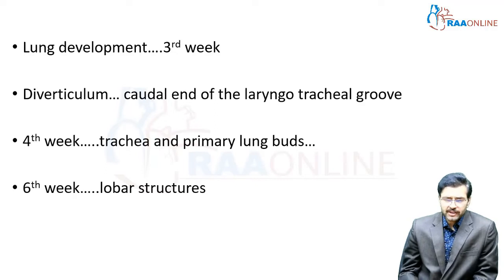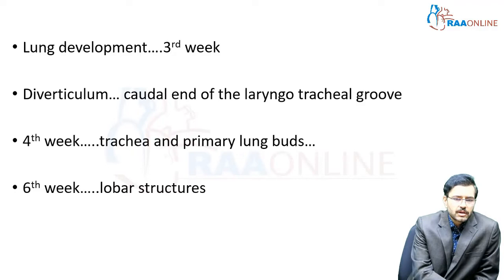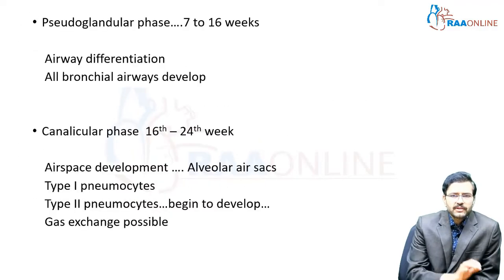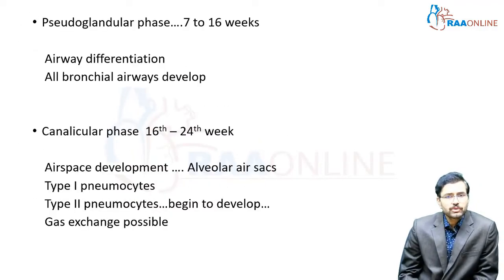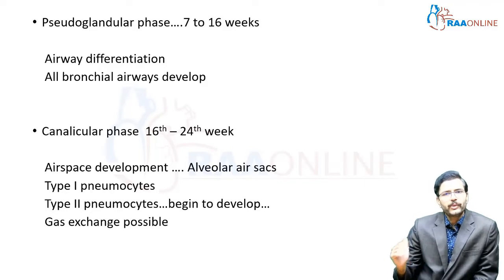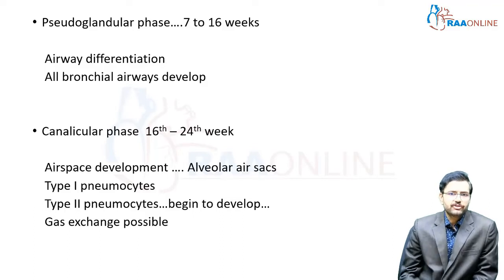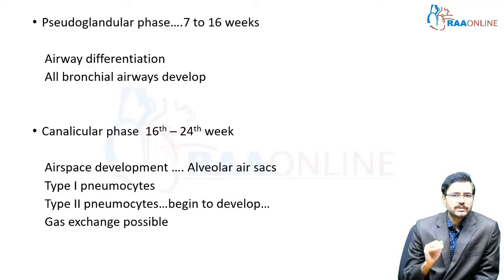By the sixth week, we have lobar structures developing from the primary lung buds. From the seventh week onwards, the pseudoglandular phase begins and goes up to 16 weeks of gestation. During the pseudoglandular phase, there is airway differentiation — all the bronchial airways develop during this particular phase of lung development.